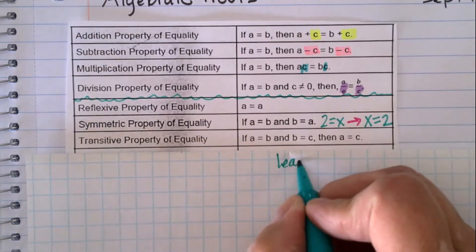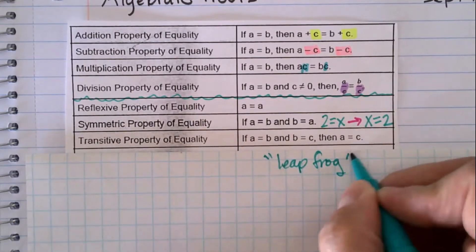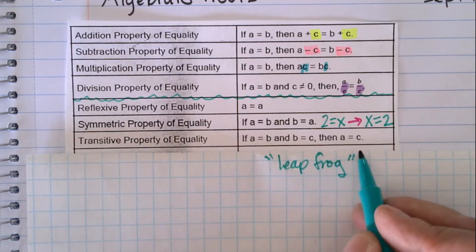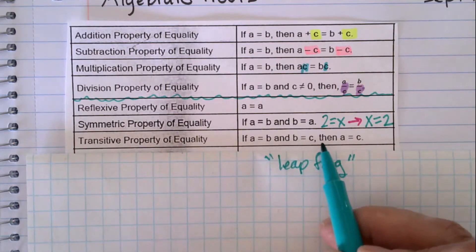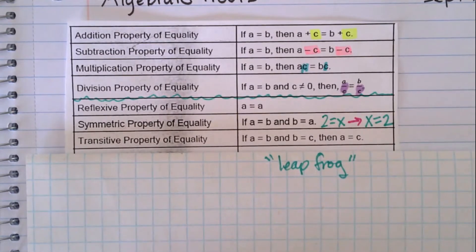Transitive property, you've probably seen that before. Some teachers call it the leapfrog property. If a equals b and b equals c, then a equals c. So it's like you can just sort of jump over b. We won't use that in here as much. Geometry is going to use that one a lot.